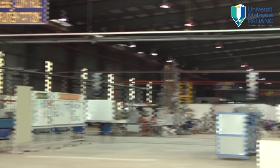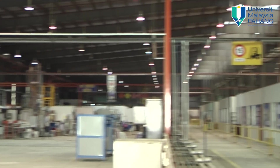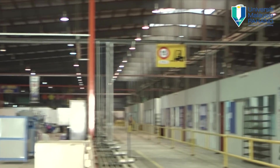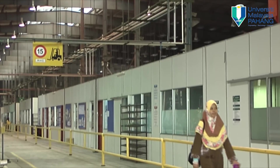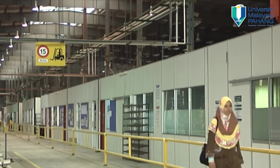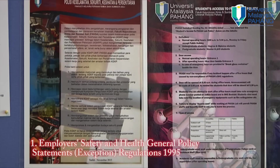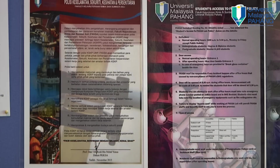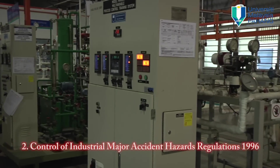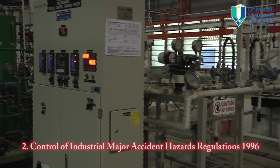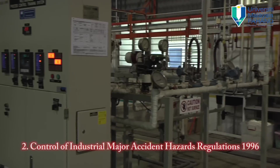There are seven regulations listed under OSHA 1994. Number one, Employer Safety and Health General Policy Statements (Exceptions) Regulations 1995. Number two, Control of Industrial Major Accident Hazards Regulations 1996.